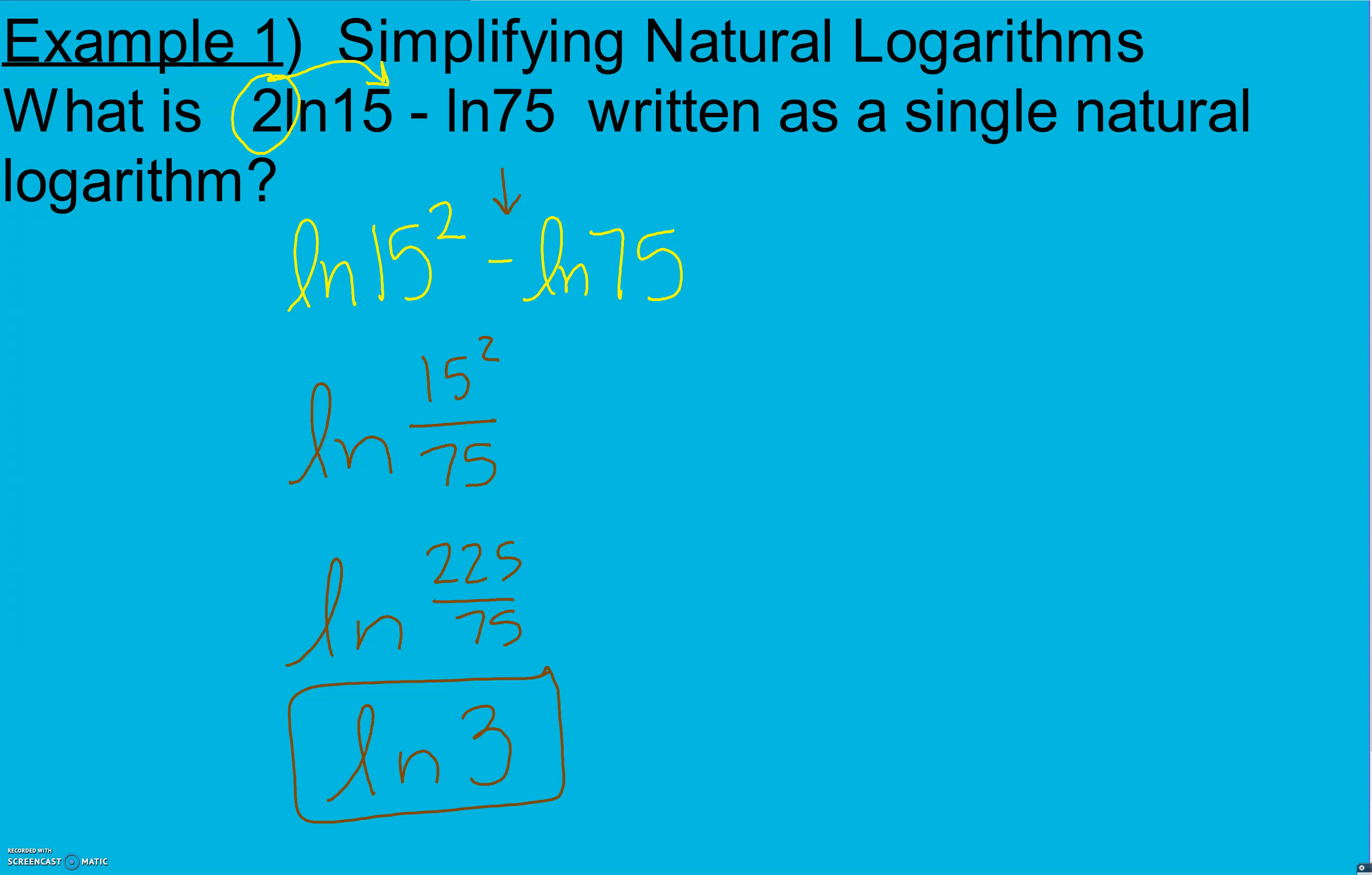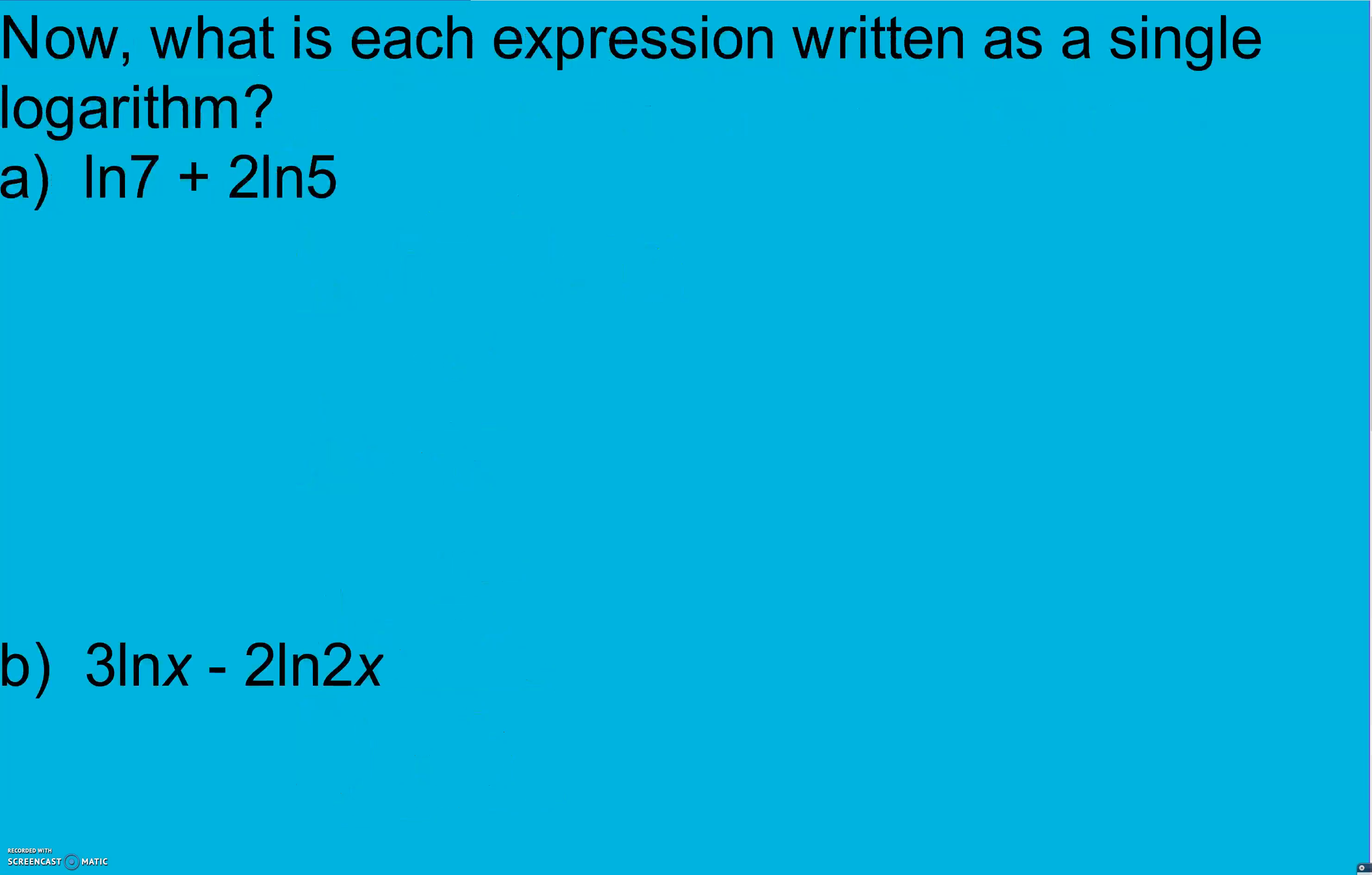Again our properties work the same way here as they did yesterday. Go ahead and try these. What is each expression written as a single logarithm? The first thing I'm going to do is get rid of any exponents. ln of 7 plus ln 5 squared is 25. Now this plus right here means I'm going to multiply when I put them together as one: ln of 7 times 25 which gives me ln of 175.